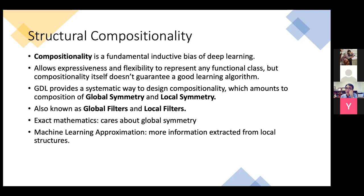Compositionality is basically stacking multiple different functions together to get something more powerful. That's basically the reason why deep learning neural networks work better than shallow ones — with multiple layers of feature extractors, you get much richer features in the middle. However, the feature extractors need more knowledge about the domain for the features to be useful. Compositionality is a fundamental inductive bias of deep learning — the notion that by composing simple functions, you can express very complicated things.